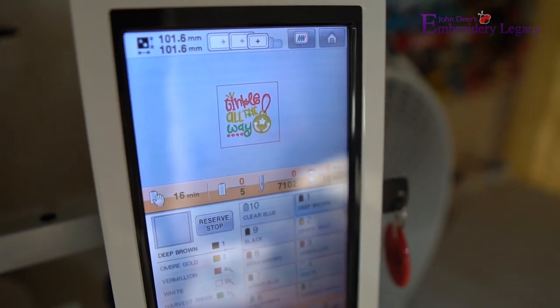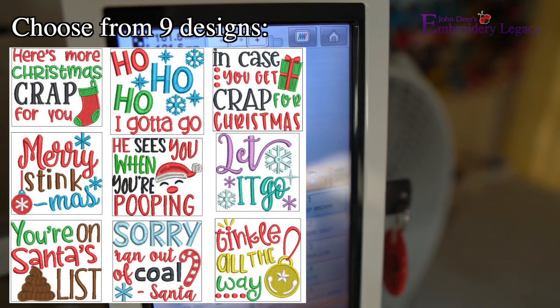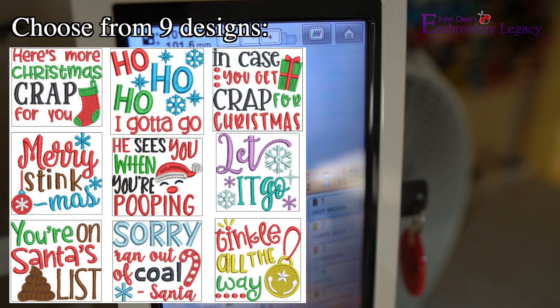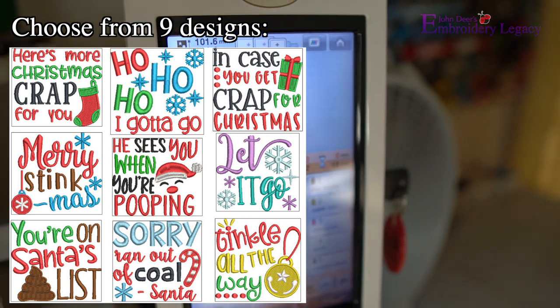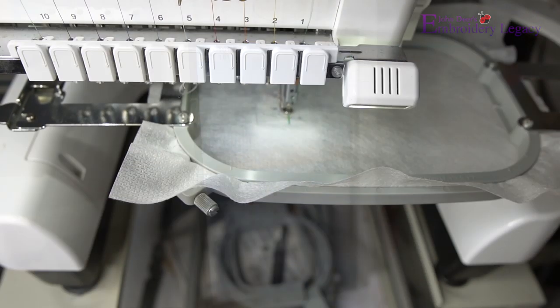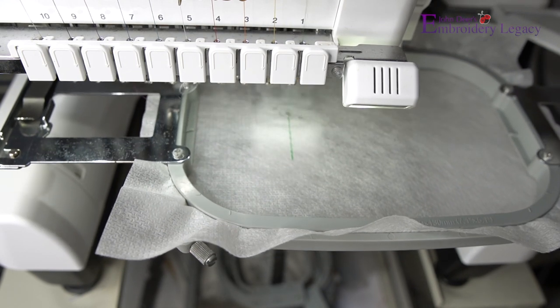Just so you know, all nine of these holiday designs were digitized for leather or suede, giving the design much lower density, allowing us to embroider on this toilet paper roll. Now start by embroidering the placement stitches.